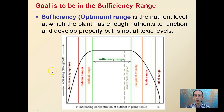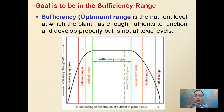The goal is to be in the sufficiency range. We see here: increasing concentration of nutrient leads to increasing plant growth, up to the point of maximum plant growth. This is called the sufficiency or optimum range. At this level, the plant has enough nutrients to function and develop properly, but not at toxic levels. This sufficiency range should be the target of growers.